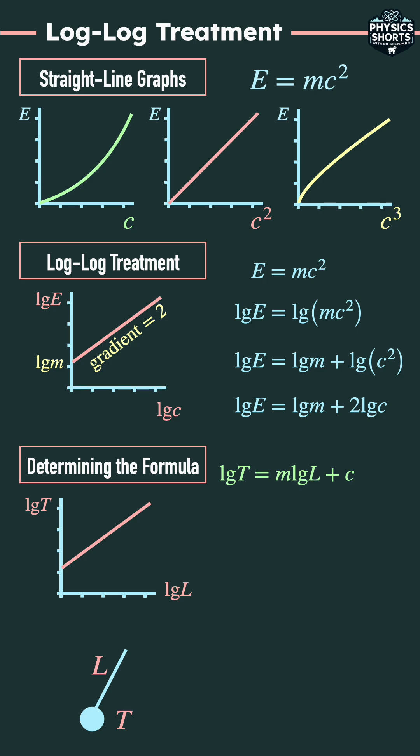Let's say the results from the experiment show that the gradient is a half and the Y intercept is 0.302. So those were our experimental results.